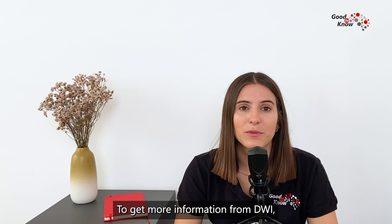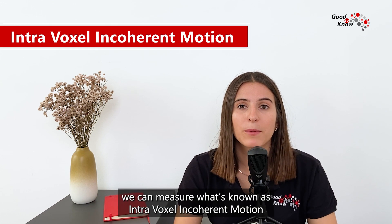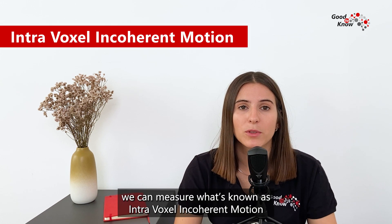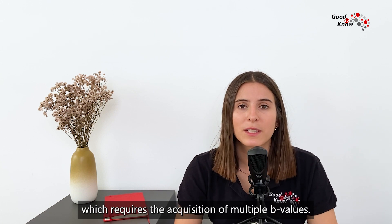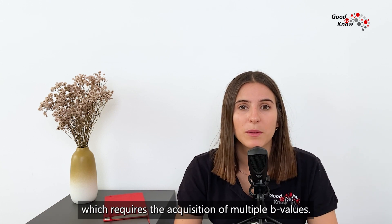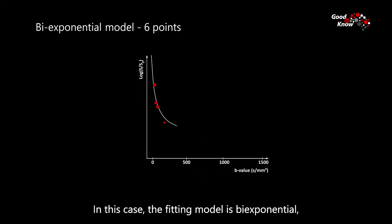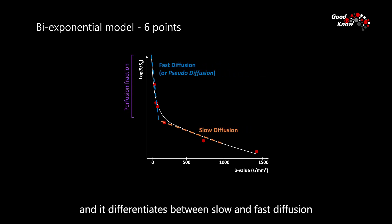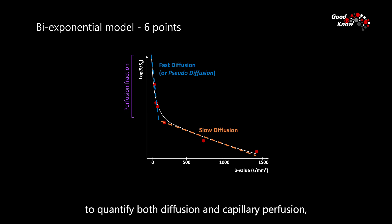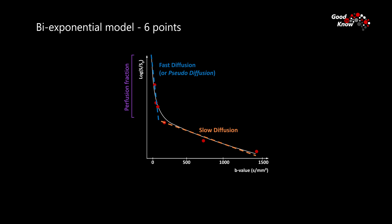To get more information from DWI, we can measure what's known as intravoxel incoherent motion, IVIM for short, which requires the acquisition of multiple b-values. In this case, the fitting model is bi-exponential, and it differentiates between slow and fast diffusion to quantify both diffusion and capillary perfusion, also known as pseudodiffusion.